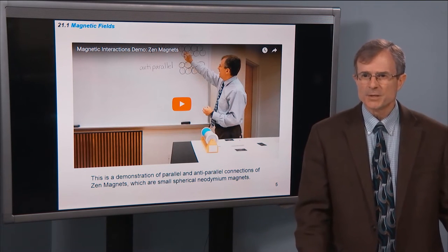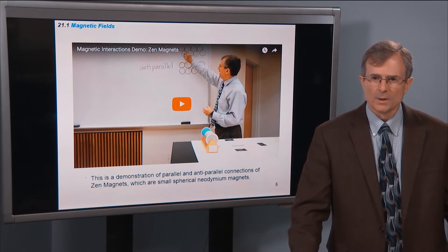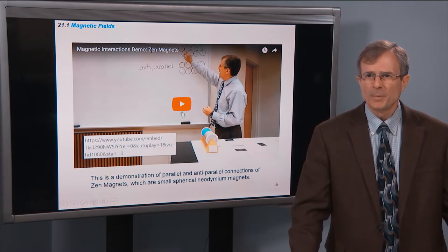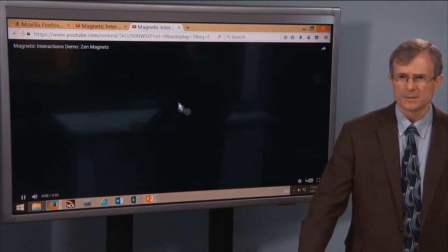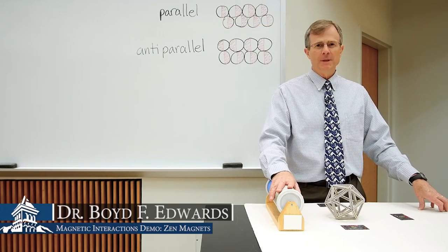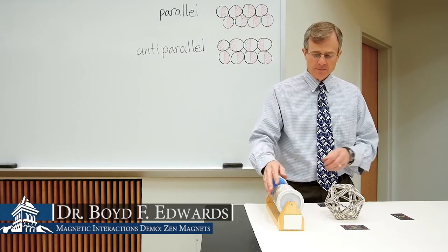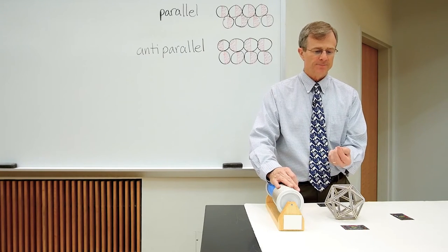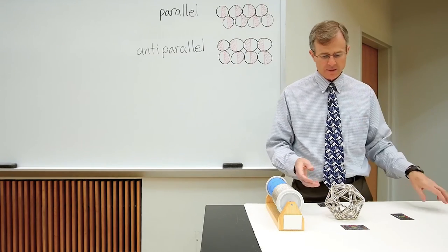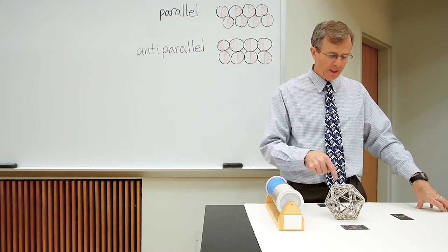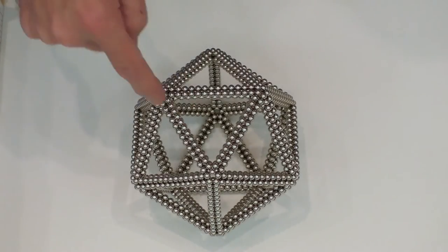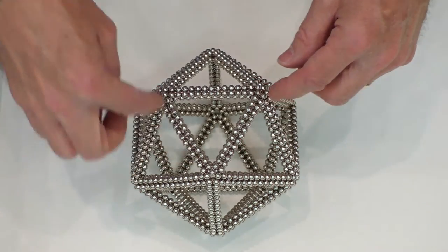In this first demonstration, we're going to show parallel and anti-parallel connections of Zen magnets. These are small neodymium magnets — they're spheres. They can be used to build things like this icosahedron.